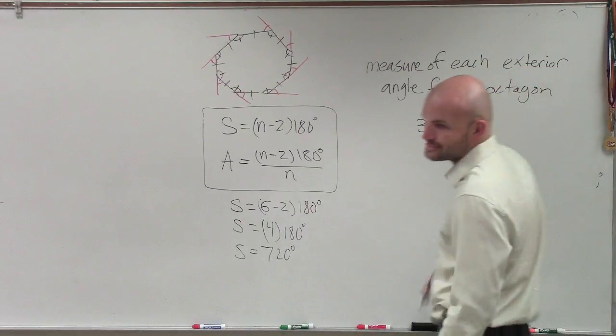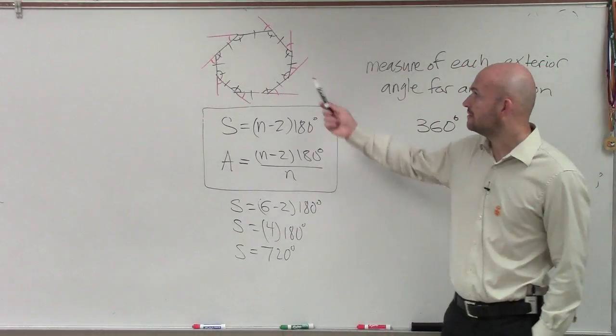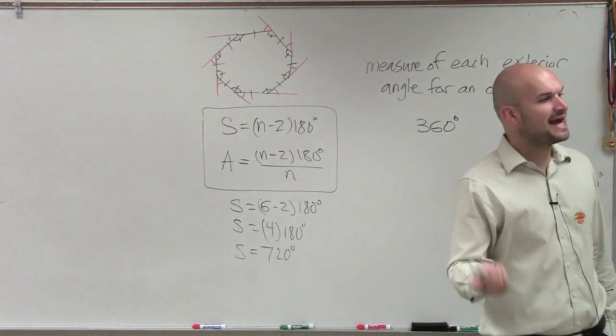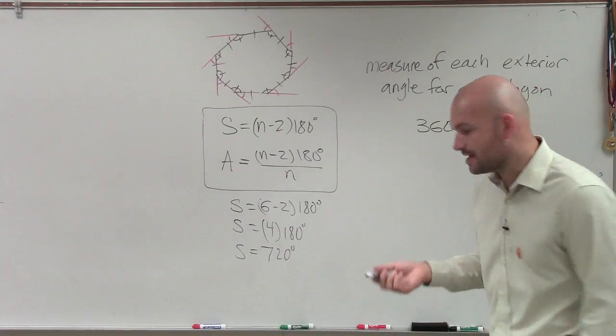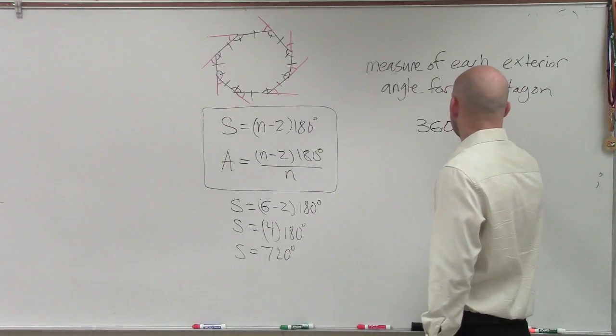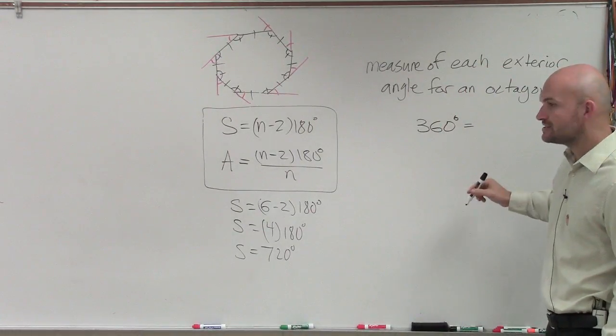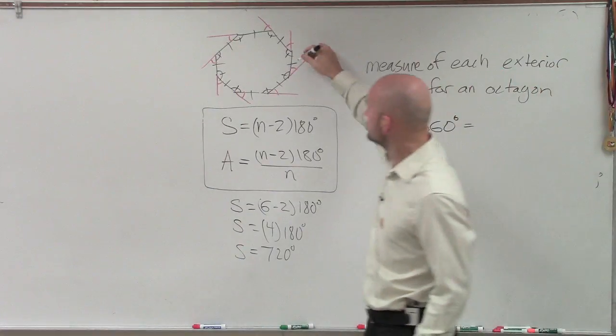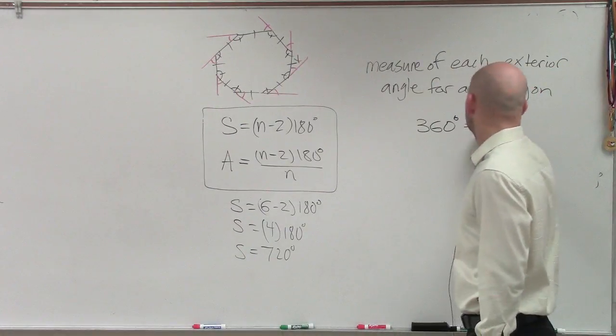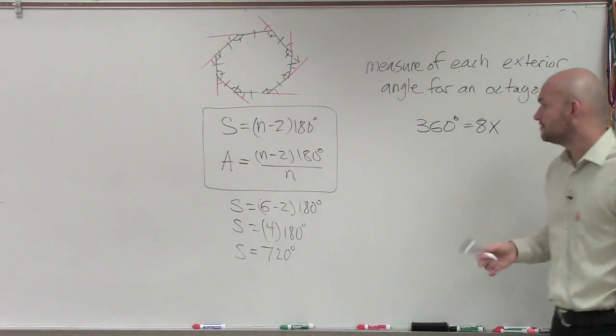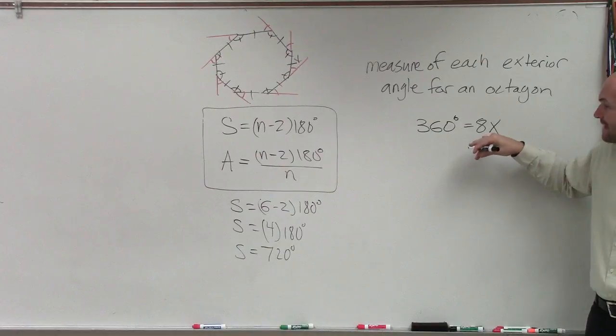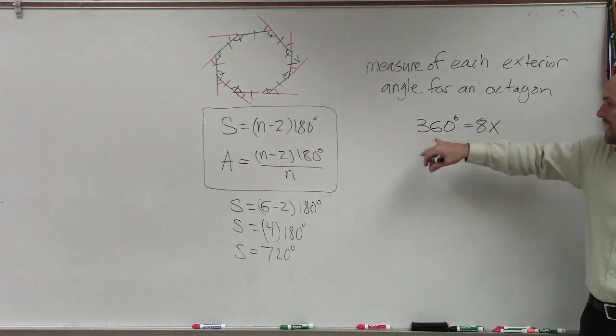So how many exterior angles do I have? Well, 1, 2, 3, 4, 5, 6, 7, 8. So I have the same amount of exterior angles as I do as the number of sides. So, therefore, I can just say 360 equals, or let's just call these angles x and 8x. Because all I really want to do now is I just want to see I have eight of them, and they all add up to 360.